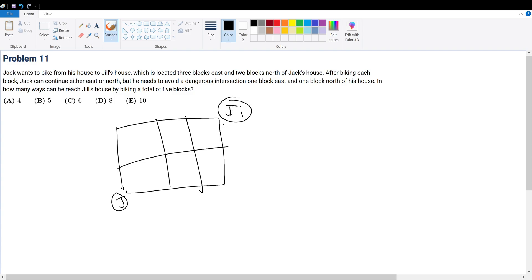Now, after biking, Jack can only go east and north, but he needs to avoid a dangerous intersection, which is right here, 1 block east and 1 block north.